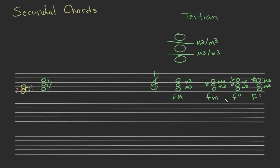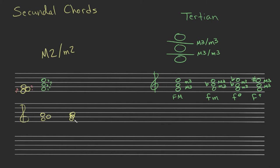We're going to use this same logic between different kinds of tertian triads to find secundal triads. Let's stay in F and use the same logic, but instead of major thirds and minor thirds, we're going to use major seconds and minor seconds. When stacking the chord, you usually want to offset the noteheads slightly so it's not too squished — just enough to make all the notes visible.